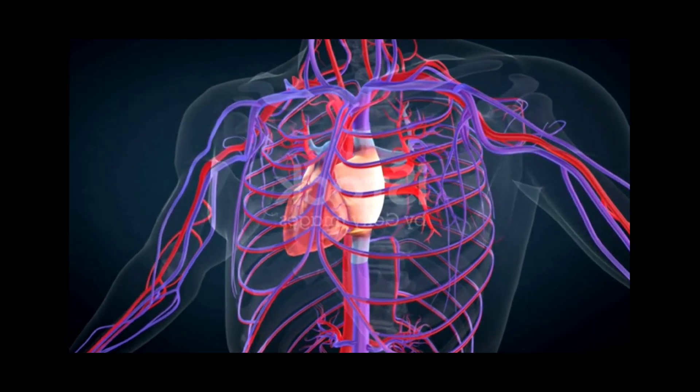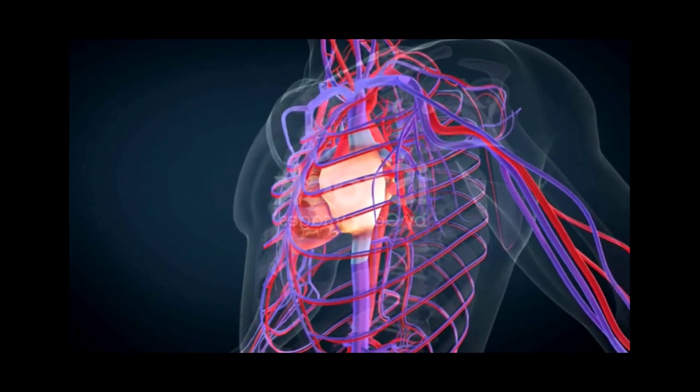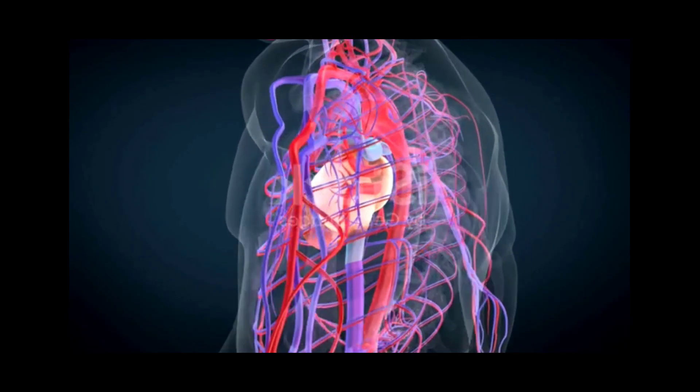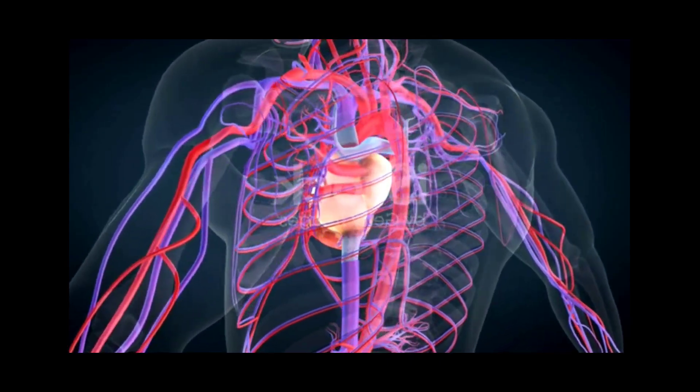The average heart is the size of a fist. In an adult, your heart will beat about 115,000 times each day. Your heart pumps about 2,000 gallons of blood every day.